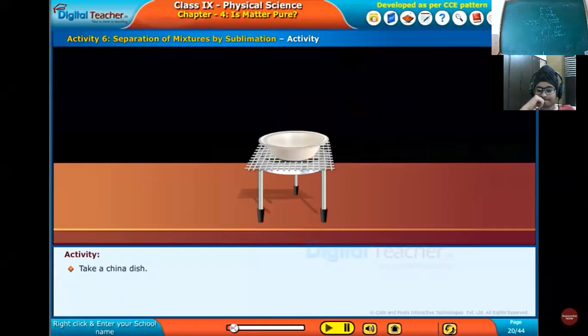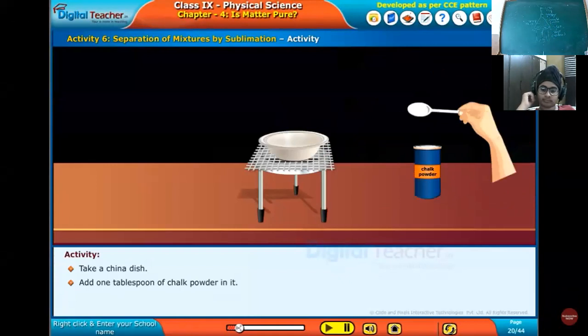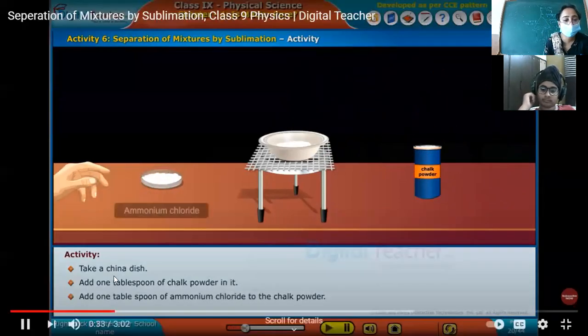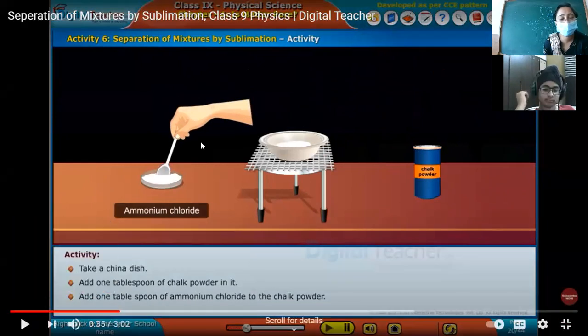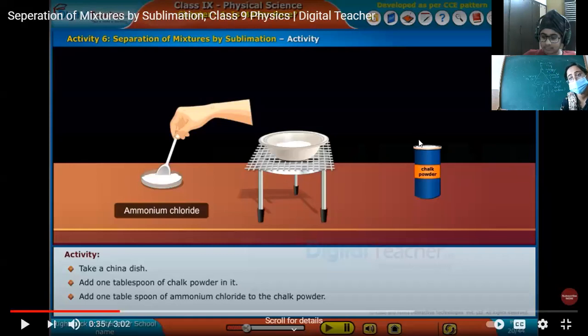Now let us perform an activity for separation of mixtures by sublimation method. Take the china dish, add one tablespoon of chalk powder in it, add one tablespoon of ammonium chloride. Can anyone tell me here they have taken a tripod stand and placed a wire gauze. Can anyone tell me why the wire gauze is placed here? Why we can't heat directly the china dish? Yes, Gurpal.